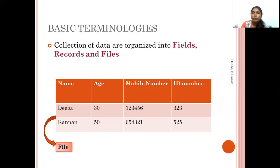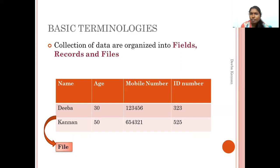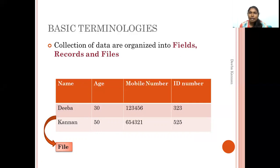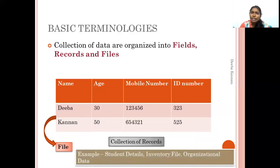That collection of records is a file. In a file, we collect a set of records with particular attributes. For example, if you collect student details, it is a student file. If you collect employee details, it is an employee file. If you collect all students' names, ages, and other attributes from a class, that is a single file. Everything — student details, inventory, organizational data — is stored as a file.